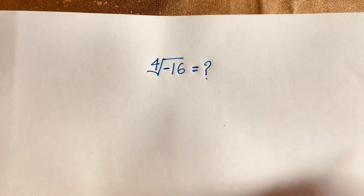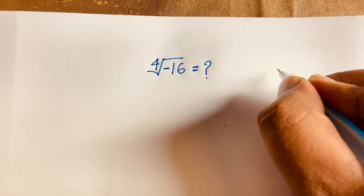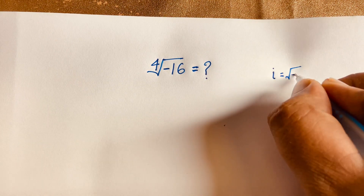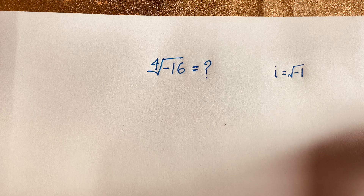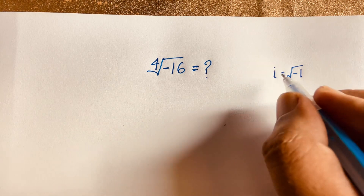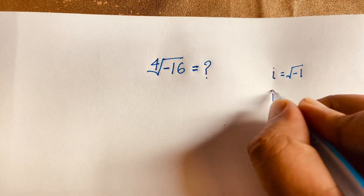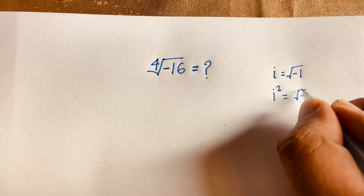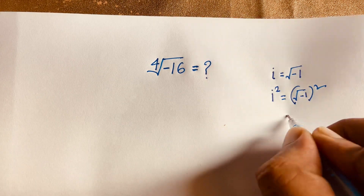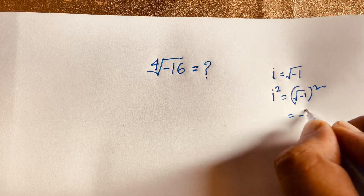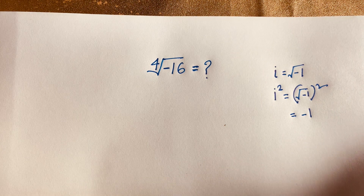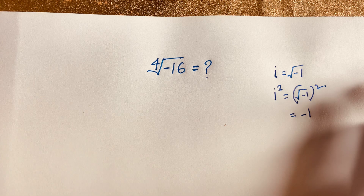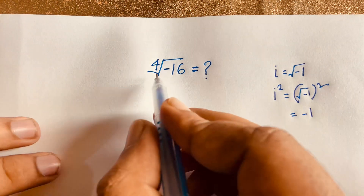The complex number i is equal to the square root of minus one. If I square both sides: i² = (√(-1))² = -1. So i² equals minus one.